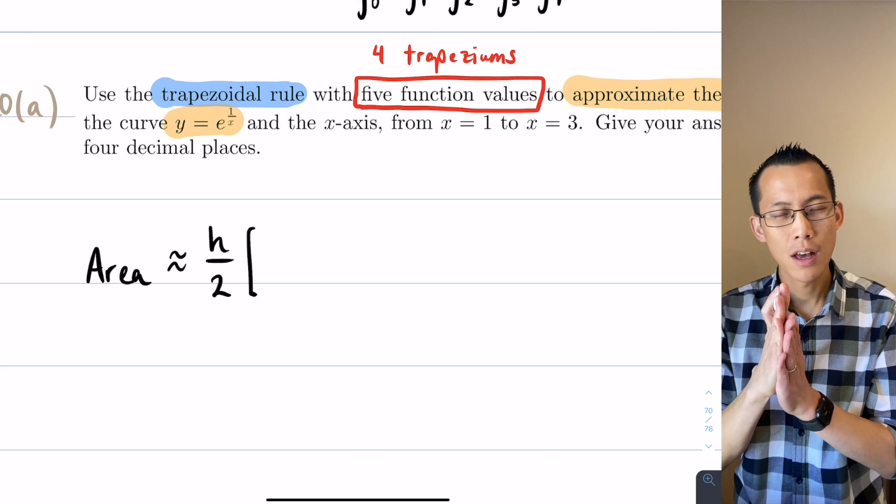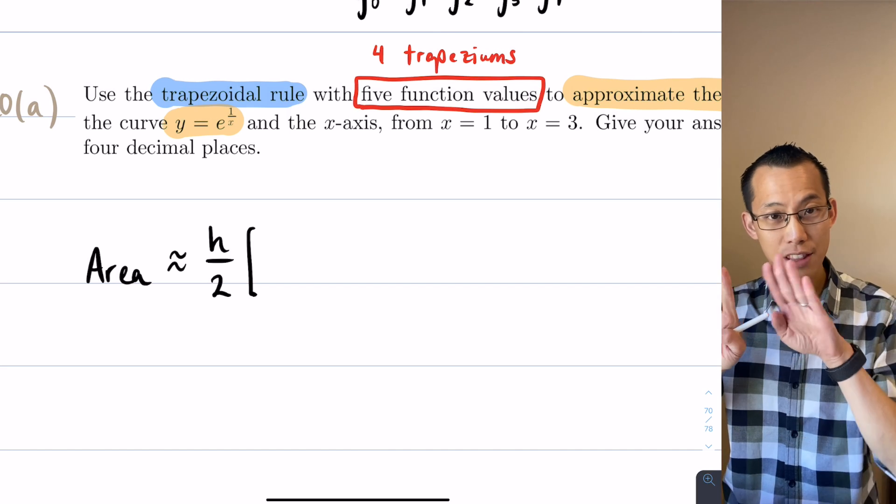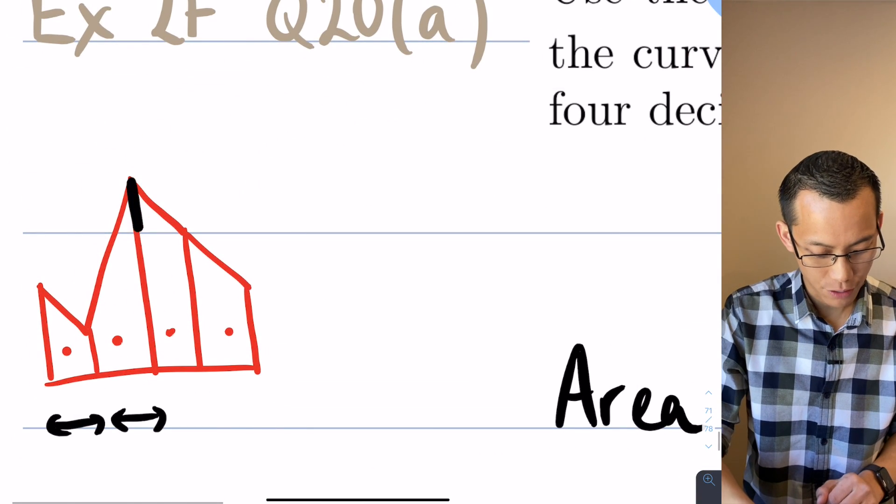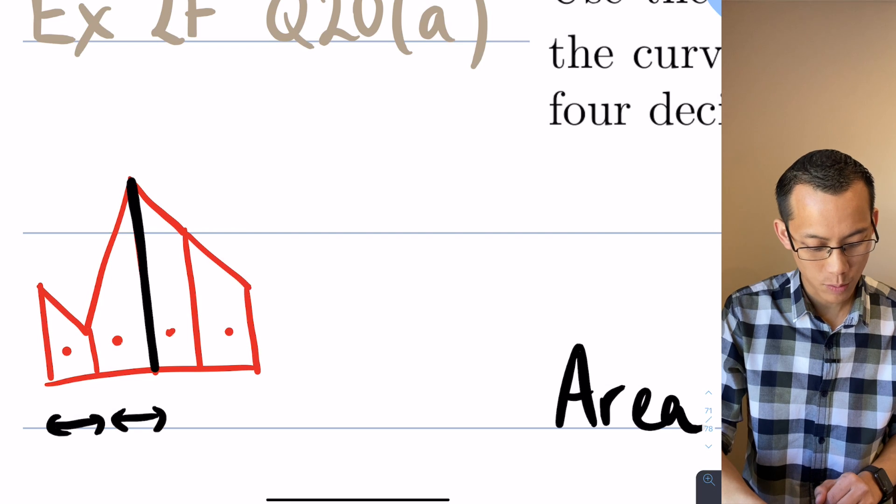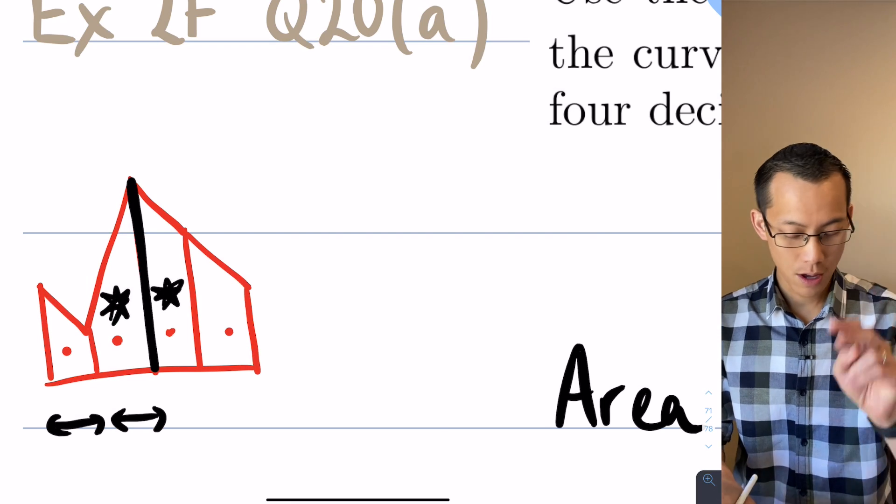Remember we're doubling the ones in the middle because each one gets used twice. It gets used by the trapezium on its left and the trapezium on its right. So this function value in here right in the middle, it gets used once by this trapezium and it gets used once by this trapezium. That's why we use it twice.